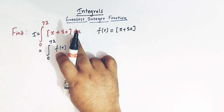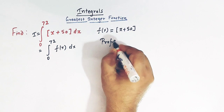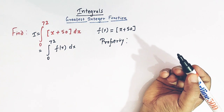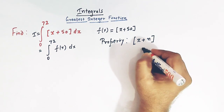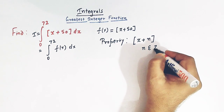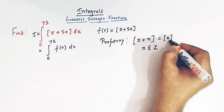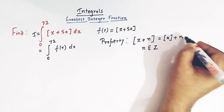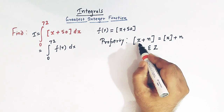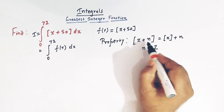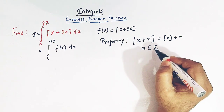Now to simplify this integral, we will make use of an important property of greatest integer function. We know that the greatest integer of x plus n, where n is an integer, then the greatest integer of x plus n can be written as the sum of greatest integer of x plus n. So we can separate n from the greatest integer symbol. Greatest integer of x plus n can be written as greatest integer of x plus n, where n is an integer.